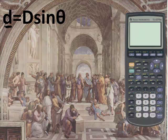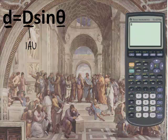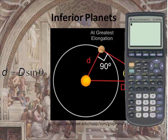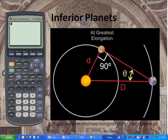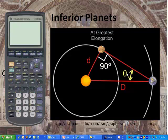So d equals D sine theta. So if I know what D is, let's say that we're trying to find the distance between Venus and the Sun. And if you knew what this greatest angle was, now this D right here is one astronomical unit. We learned probably in the first podcast that that's the distance between the Earth and the Sun. Because if we look back to our picture, this D is the Earth to the Sun. Now, if we assume that that is one, all we need to know is what is this angle right here.